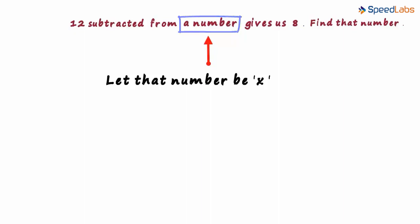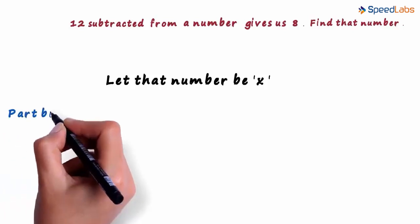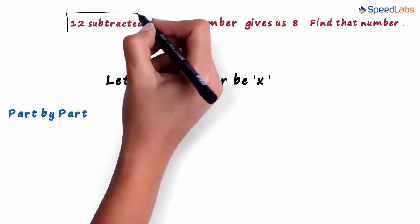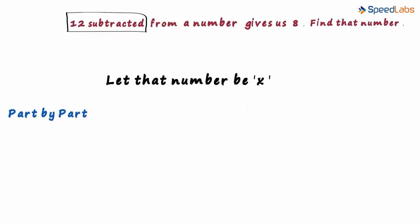To form the equation correctly, you have to read the question very carefully part by part. After you are through with this video, you will know what part by part means. So let's start reading this question. It says 12 subtracted and we stop. This is our first part: 12 subtracted.